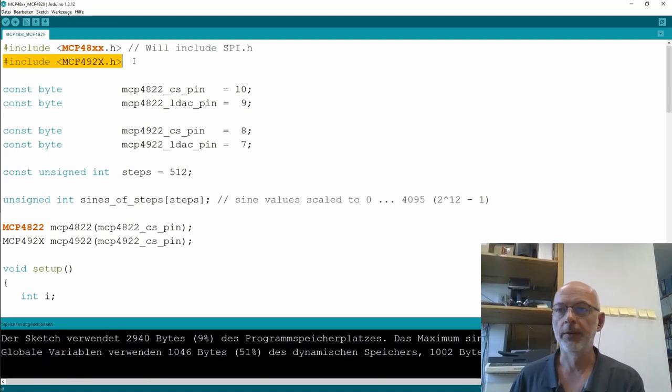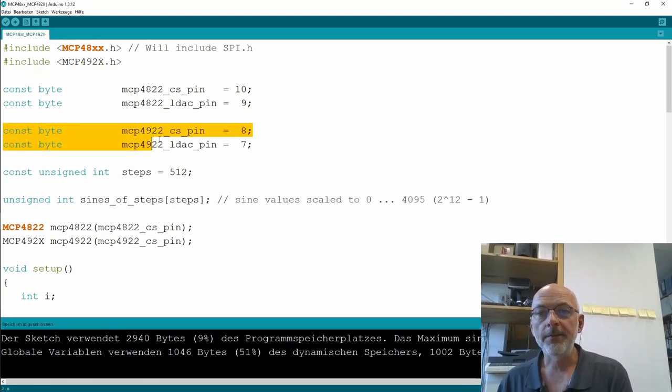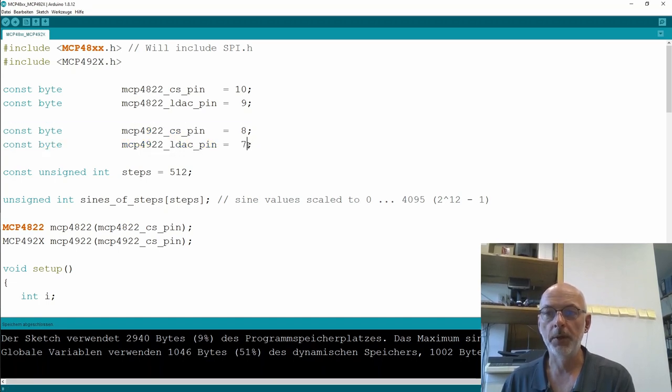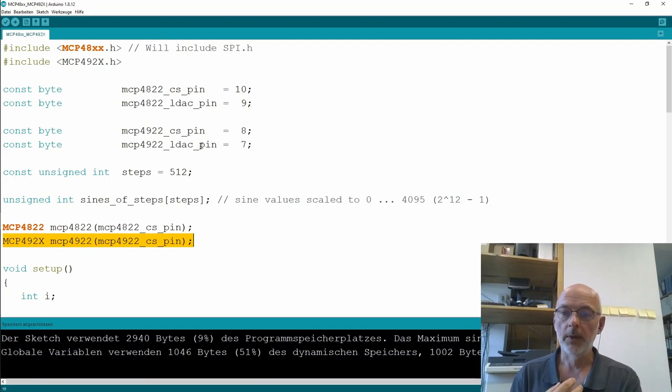I'm defining two more pins: my chip select pin number 8 for the 4922 and my load DAC pin number 7. The rest here - the constant how many steps my sine wave will have and the array - all the same. I instantiate a new object for the 4922. And as for the other library, I have to pass the chip select pin. The load DAC pin you will have to handle yourself.